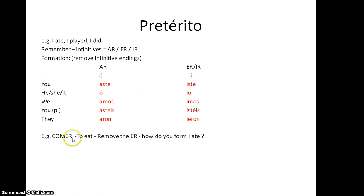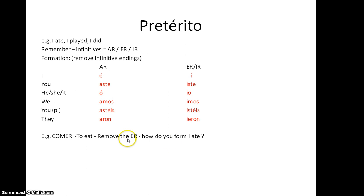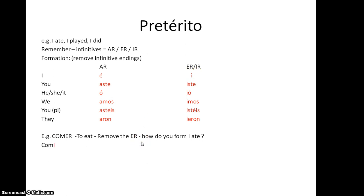Let's take an example. Comer — to eat — is an ER verb because it has ER on the end. We remove the ER to get our stem. So, how do we form 'I ate'? I take Comer, remove the ER, and I'm left with 'Com.' It's an ER verb, so I look at the list and add an 'í' for the I-form. So we get Comí.